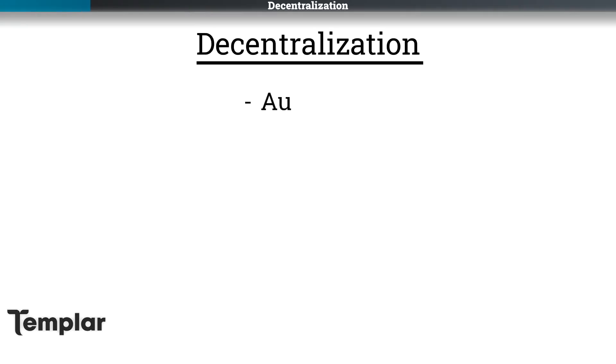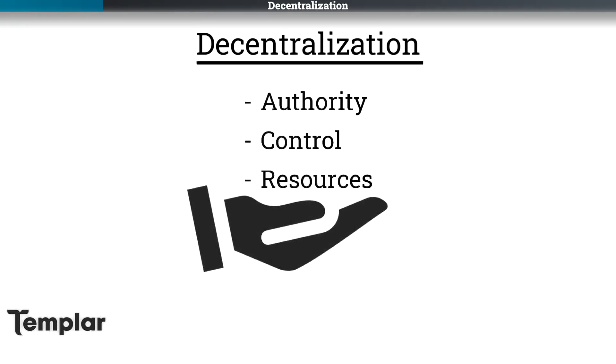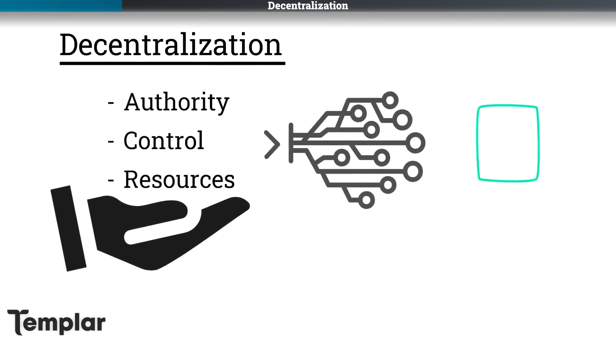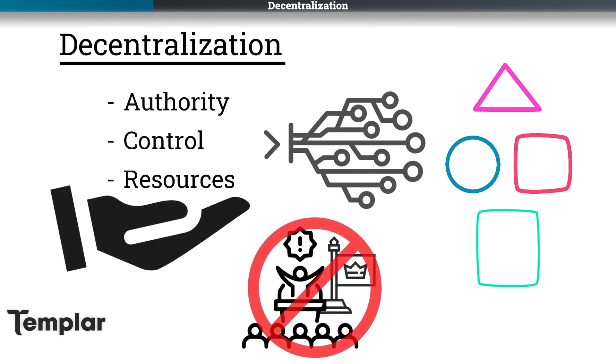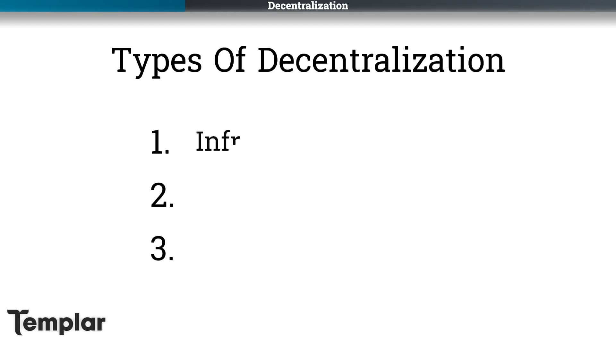Let's compare the decentralization of both BitTensor and ICP, because they are both decentralized in different ways. Decentralization refers to the distribution of authority, control, and resources across a network of participants rather than concentrating them in a single entity such as a company or government. I'm going to split this into three kinds of decentralization. The first is infrastructure decentralization. In ICP, reliance on established cloud services like AWS is considered centralization, so ICP tends to do better here on infrastructure decentralization than BitTensor.